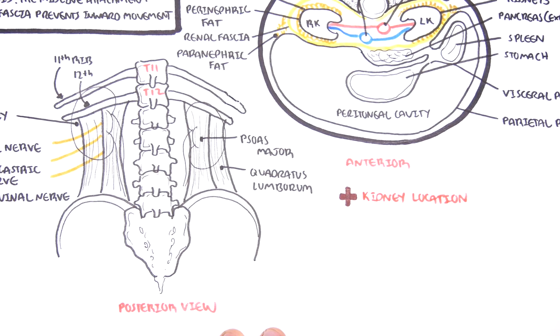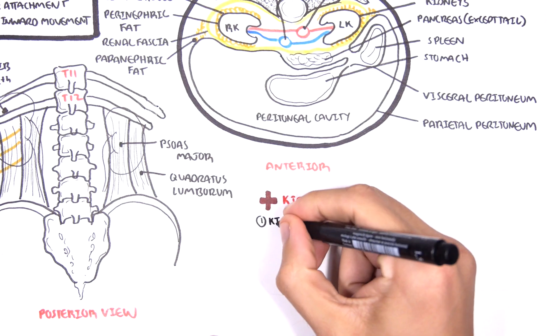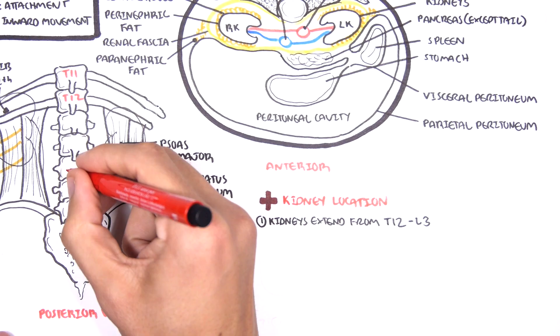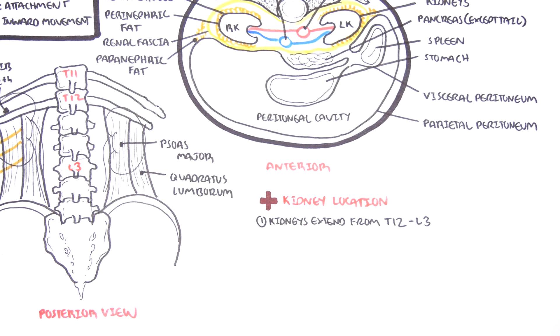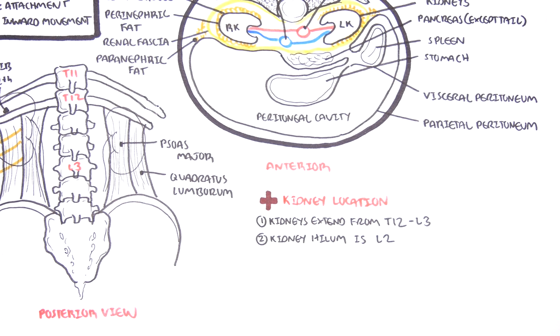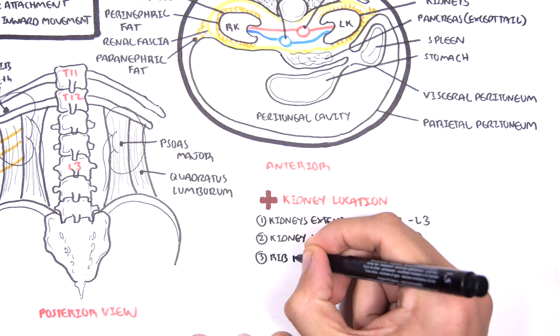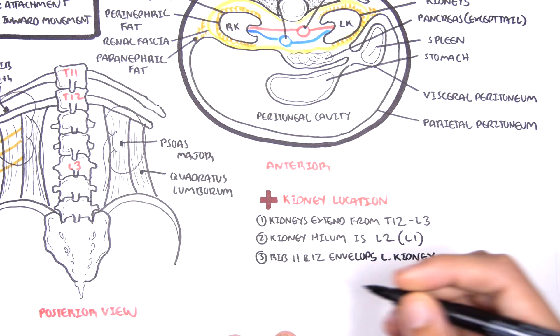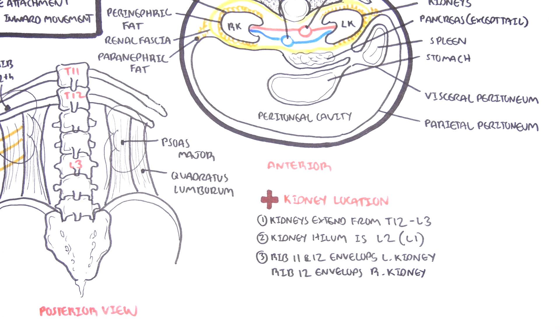Some clinical anatomy. The kidney extends from T12 to L3 vertebral level. The kidney hilum is about L2 or L1. This is also where the renal artery is situated. Ribs 11 and 12 envelope the left kidney and rib 12 envelopes the right kidney.